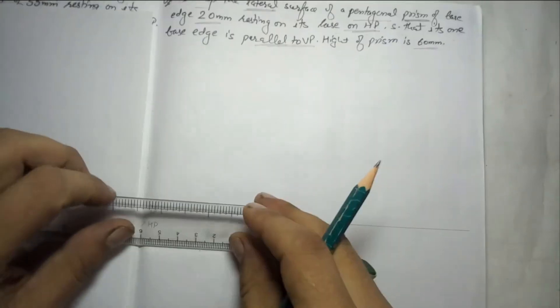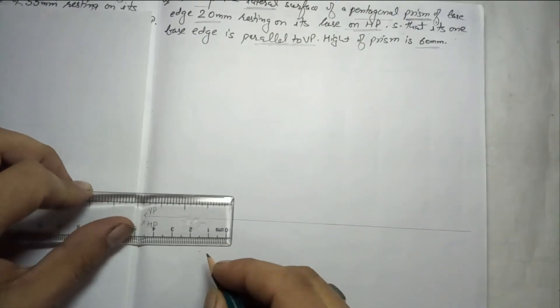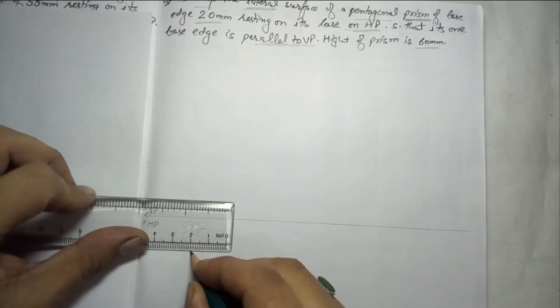First, we draw the XY line as we do in all questions. This is VP-HP. I told you every time we have to start with the top view. When we have to draw a polygon, I have given you the formula for internal angle: 180 minus 360 by n. So the internal angle equals 108 degrees.